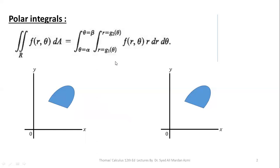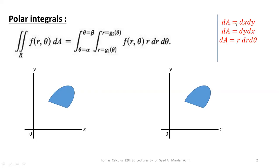For example, this is our region. In order to calculate this integral, we will use dA as r dr dθ. Please remember, in Cartesian coordinate system we can choose dA as dx dy or dy dx, but in polar coordinate system we will use dA as r dr dθ always. This order is fixed in polar coordinate system.